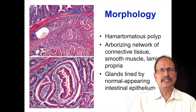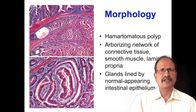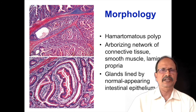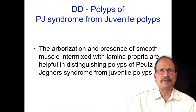Histologically, you may appreciate the presence of a jumbled mixture — smooth muscle running around the lamina propria in an arborizing fashion, with glands lined by a single layer of columnar epithelium which mimics the normal gland. This arborizing smooth muscle extension into the lamina propria is characteristically seen in Peutz-Jeghers hamartomatous polyps.